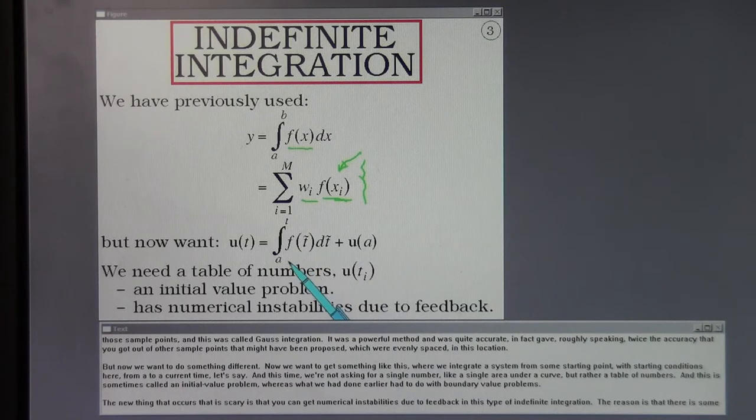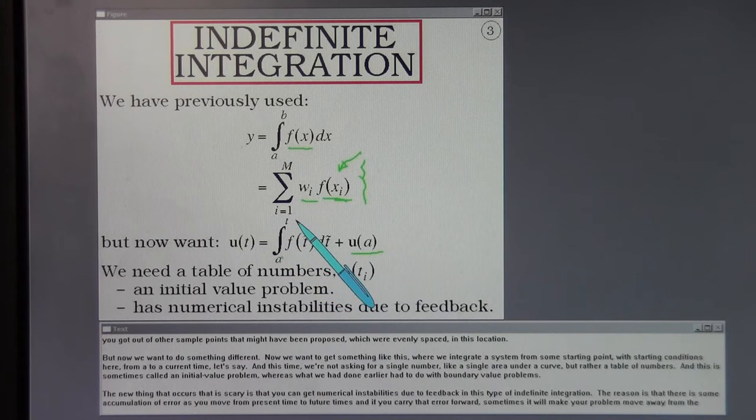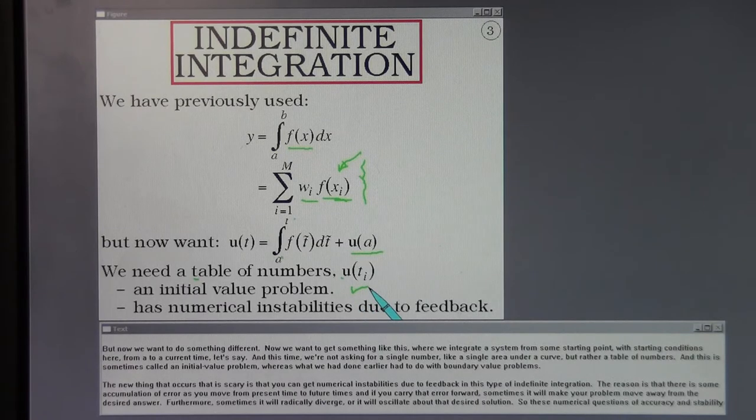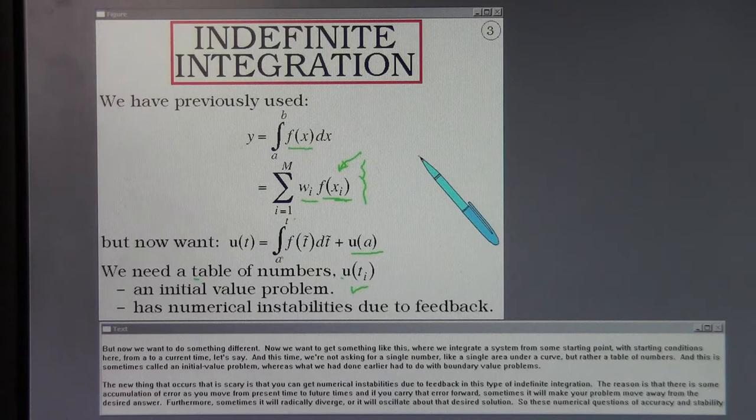But now we want to do something different. We want to get something like this, where we integrate a system from some starting point with starting conditions here from A to a current time. And this time we're not asking for a single number, like a single area under a curve, but rather a table of numbers. This is sometimes called an initial value problem, whereas what we had done earlier had to do with boundary value problems.